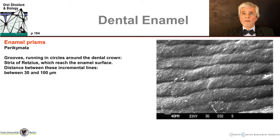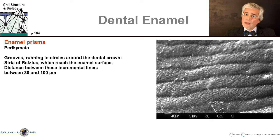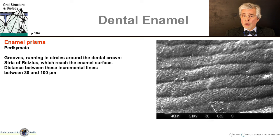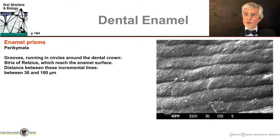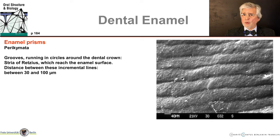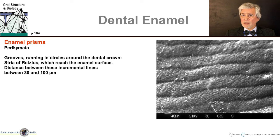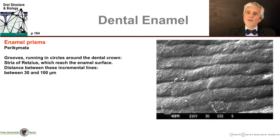These growth lines — incremental lines, the Retzius lines — reach the enamel surface, which is always the case cervically at the tooth crown. They are then called the perikymata. These are the grooves that run horizontally around the crown of the tooth, 30 to 100 micrometers apart, so in young people you can even see them with the naked eye in good light. Between these furrows, you can also see the many small indentations which are the impressions that the ameloblasts have left on the enamel surface.